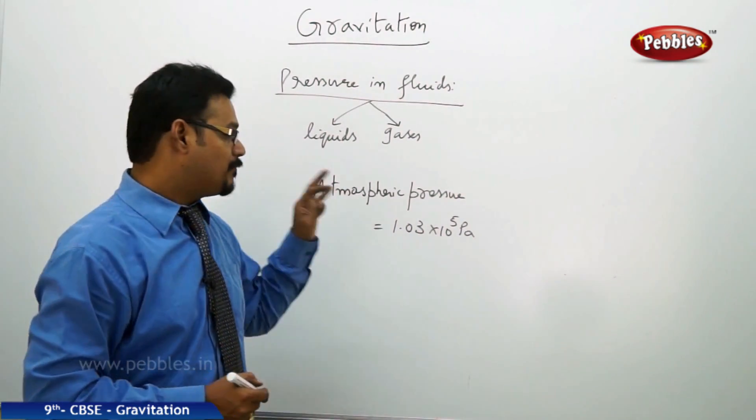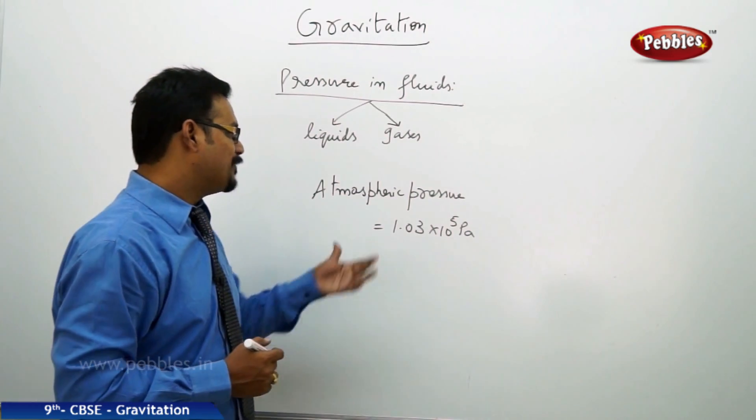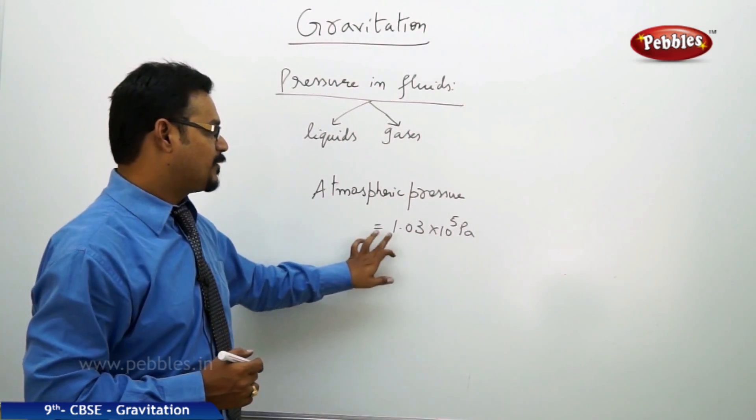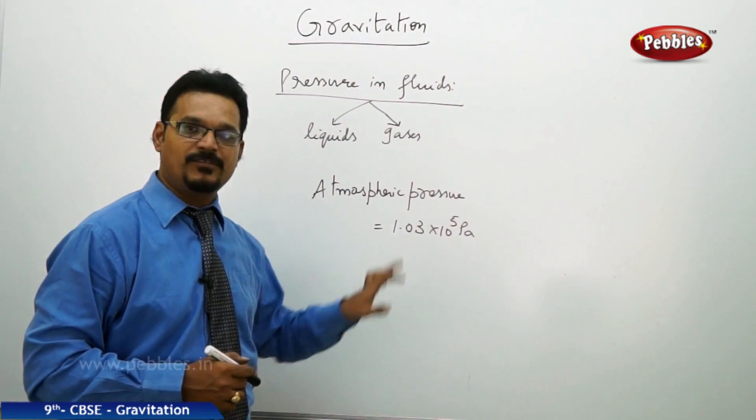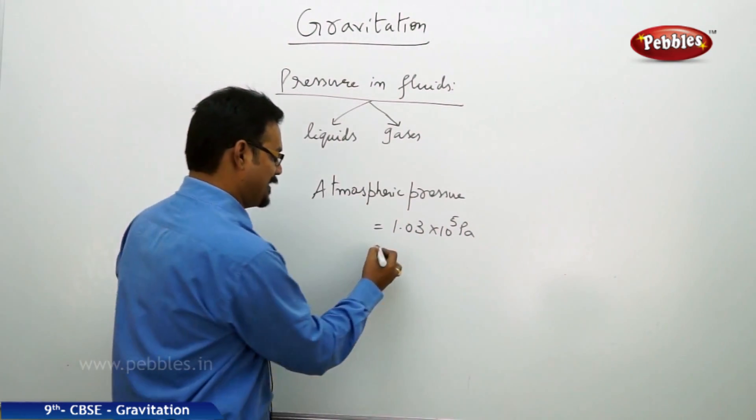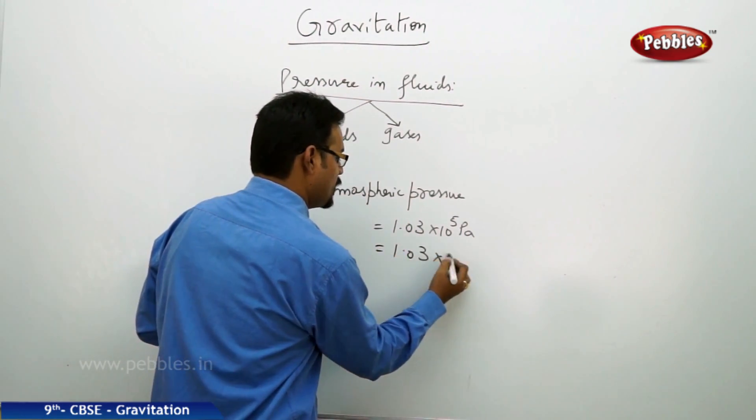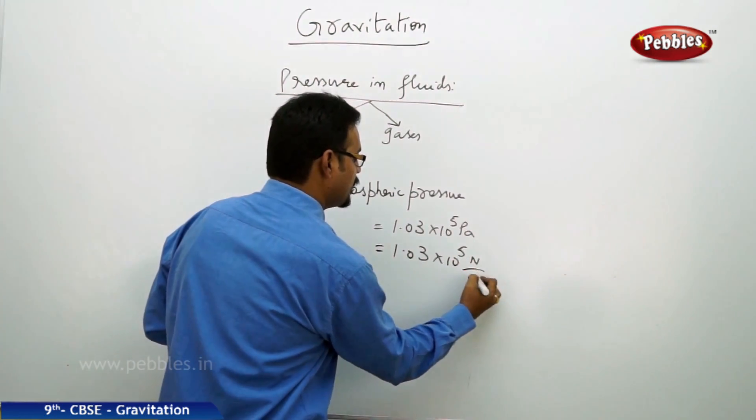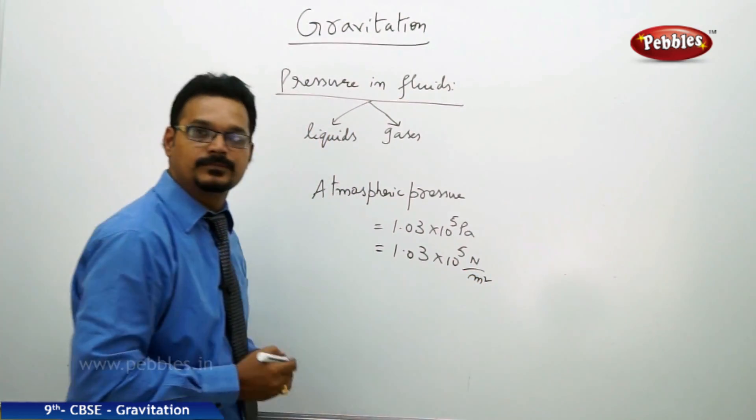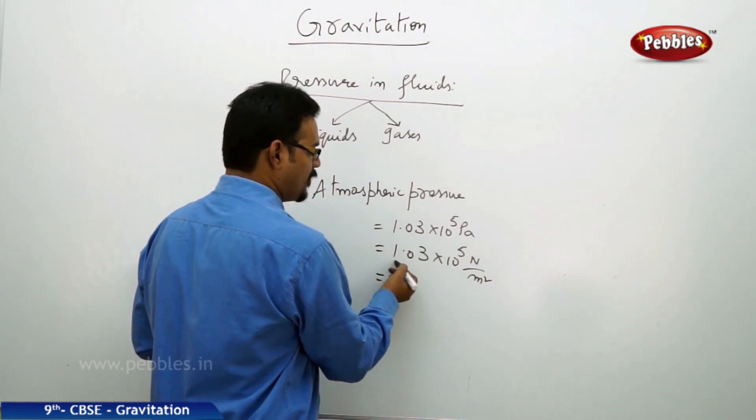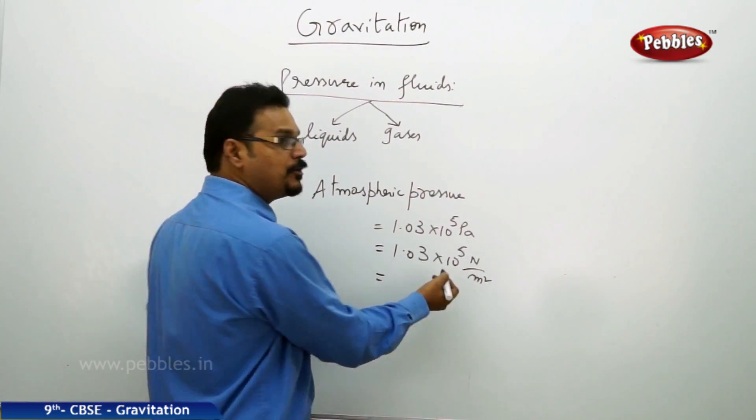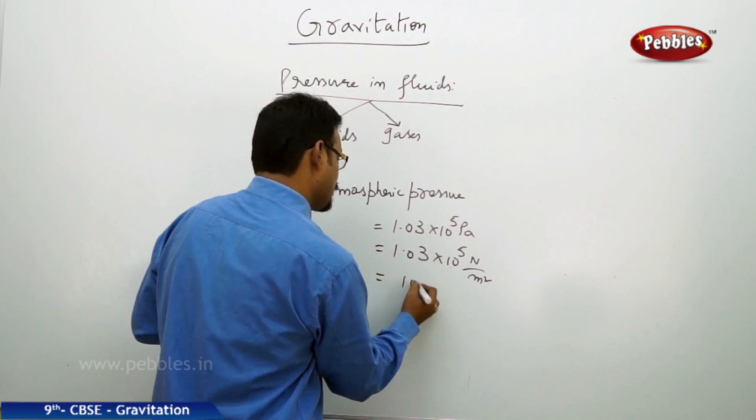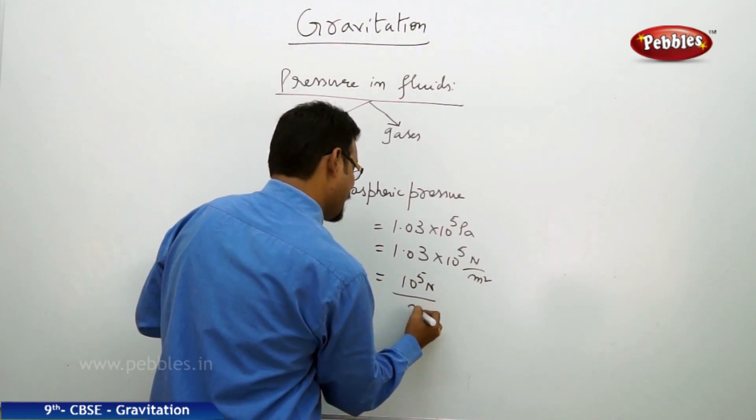But here my intention is to tell you the importance of this number: atmospheric pressure 1.03 × 10^5 Pascals. So that means 1.03 × 10^5 Newton per meter square. So it is nothing but, say, 1.03 is 1, 1 × 10^5, so 10^5 Newton by meter square means one meter square area.